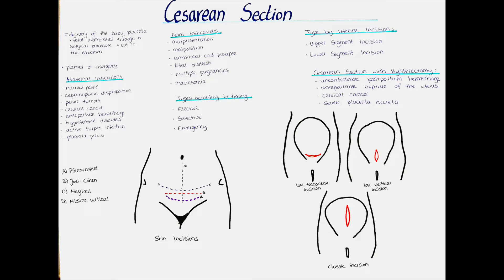Indications for a cesarean section can be divided into maternal factors and factors affecting the baby. Maternal indications include a narrow pelvis and cephalopelvic disproportion, so basically that the baby is too big to fit through the pelvis.